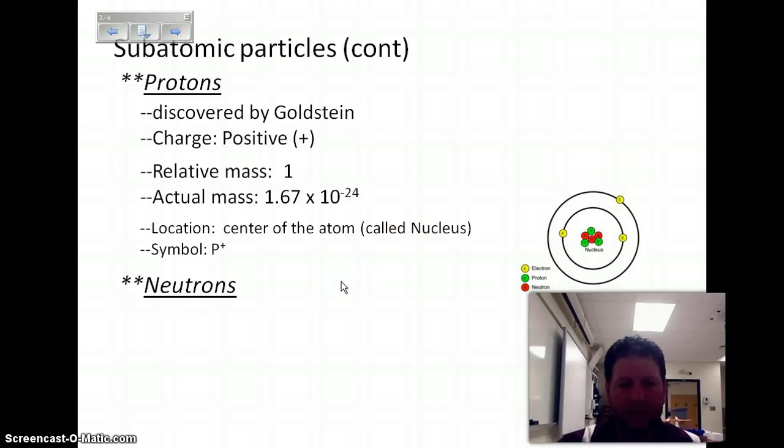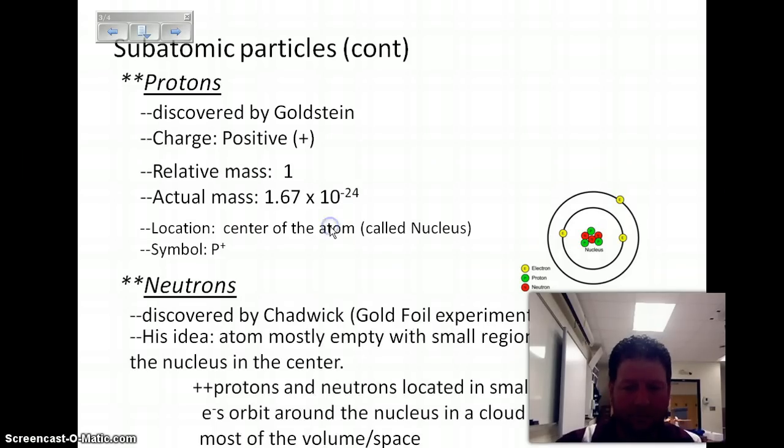The third subatomic particle that we're going to talk about are the neutrons. They were discovered by Chadwick in his Goldfoil experiment. You can take a look at that experiment on page 107 in your text. Chadwick's idea was that the atom is mostly empty with a small region called the nucleus in the center. The protons and the neutrons are located in the small, dense nucleus, and the electrons orbit around the nucleus in a cloud occupying most of the volume or the space.